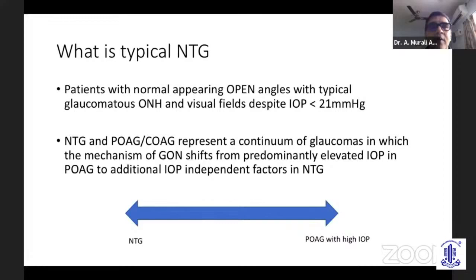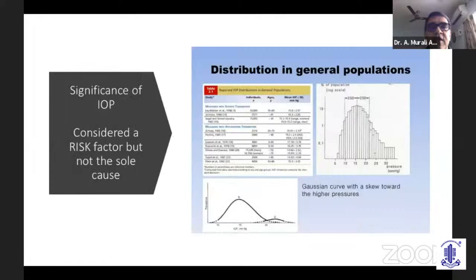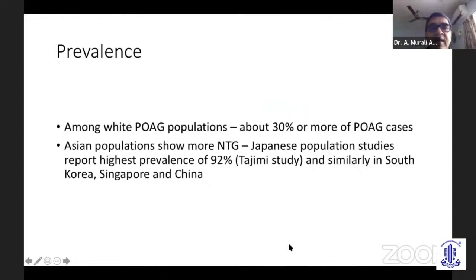Intraocular pressure has been considered a risk factor but not the only cause, and there is a skew towards higher pressures in the general population on the Gaussian curve. The prevalence among white populations is about one-third that of POAG. If you see 100 POAGs, about 30 to 40% would be NTG. The Japanese have reported the highest prevalence, with about 92% of their open-angle glaucomas being NTGs.